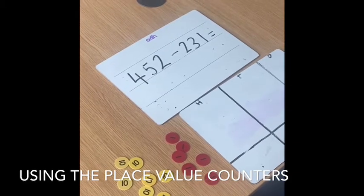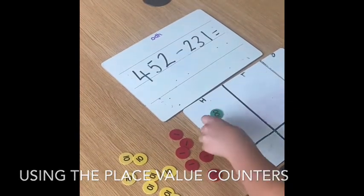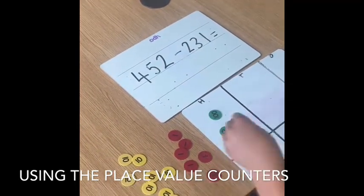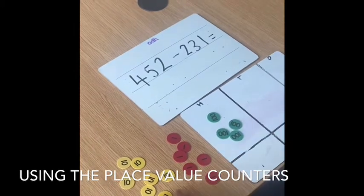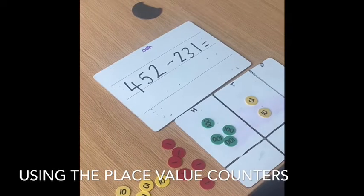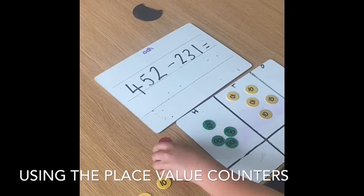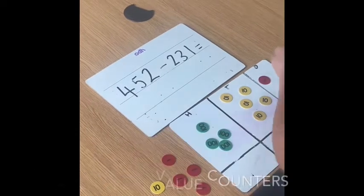To start with, I'm going to make the biggest number. 100, 200, 300, 400, 10, 20, 30, 40, 50, 1, 2.